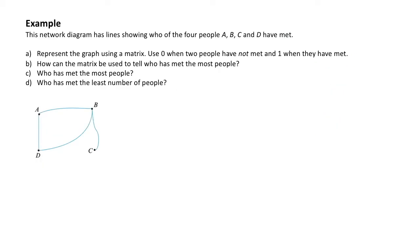In the example we are provided with a network diagram that has lines showing who of the four people have met, and we've got A, B, C and D representing the four people. The first task is to represent the graph using a matrix. We've been told that zero is going to be when the two people have not met and one is where they have met.